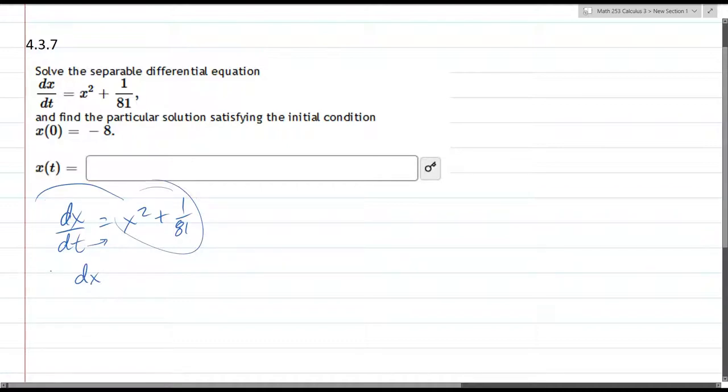So I'm going to multiply by 1 over. Let's turn the right side into a single fraction first before we do all this. So I'm going to turn x squared and put it over 81, so I need to write it as 81x squared over 81. And then this is 9 squared x squared plus 1 over 9 squared.